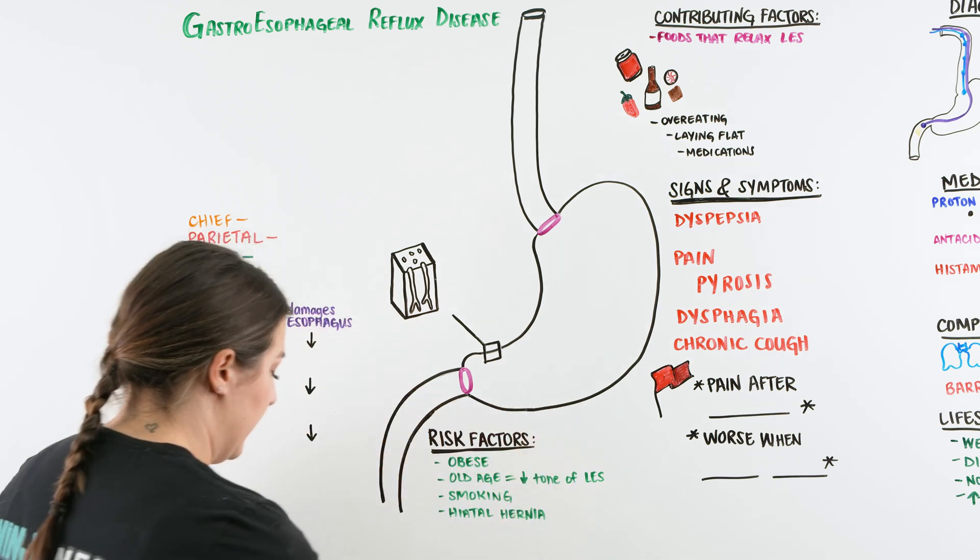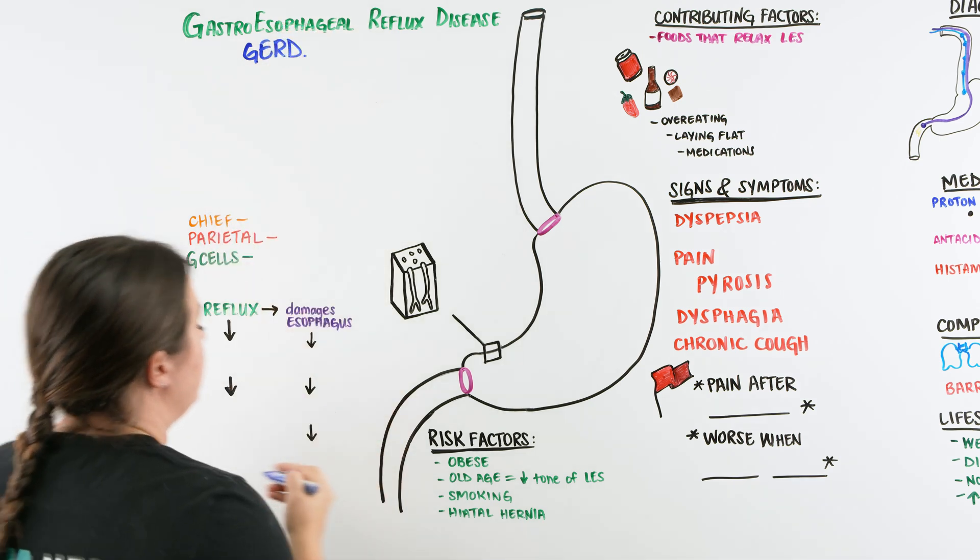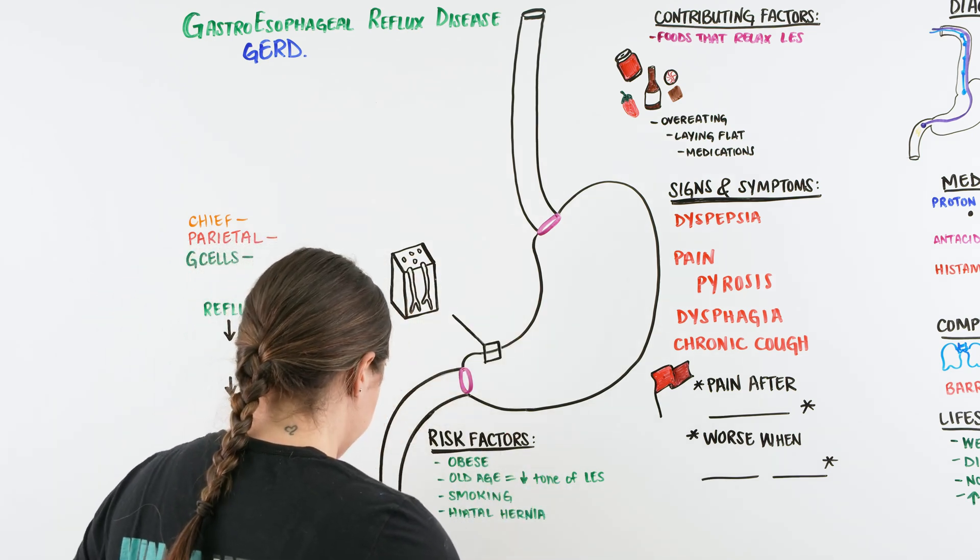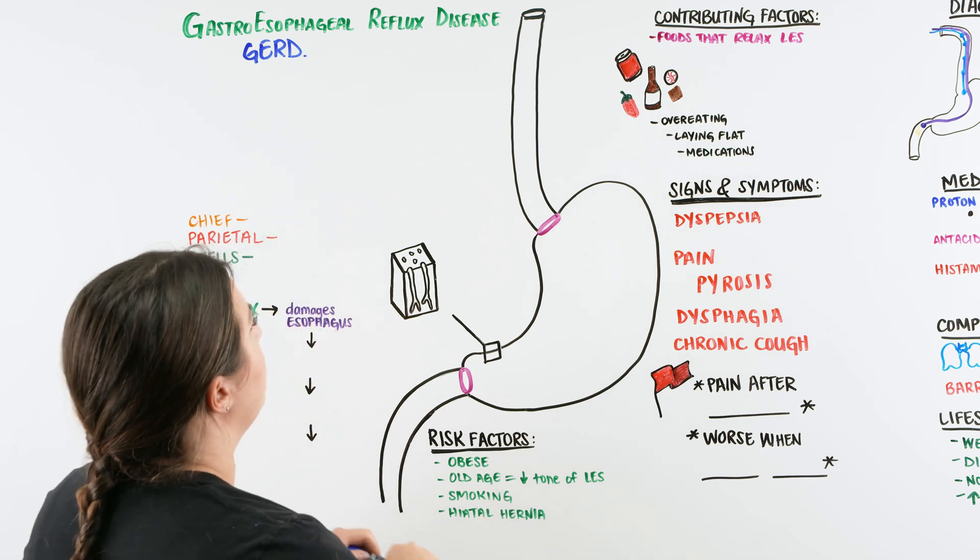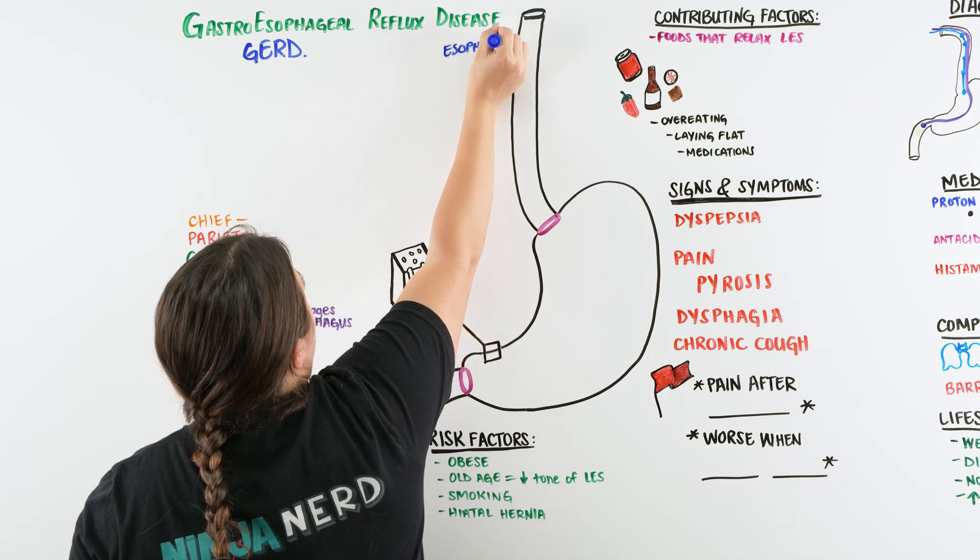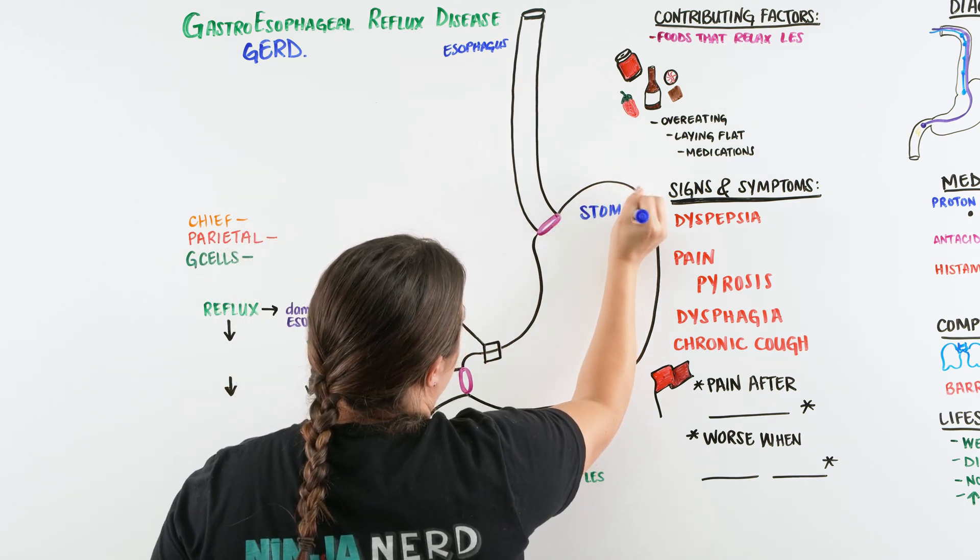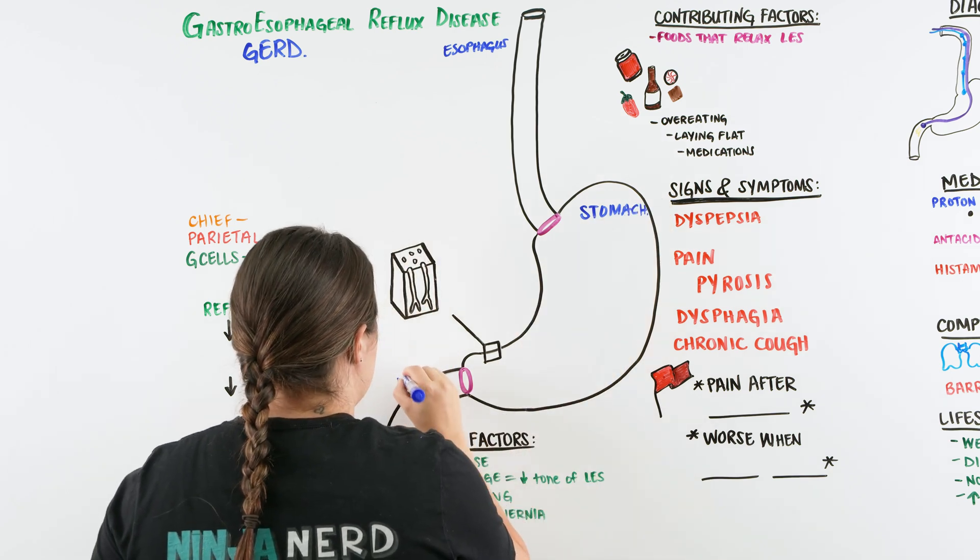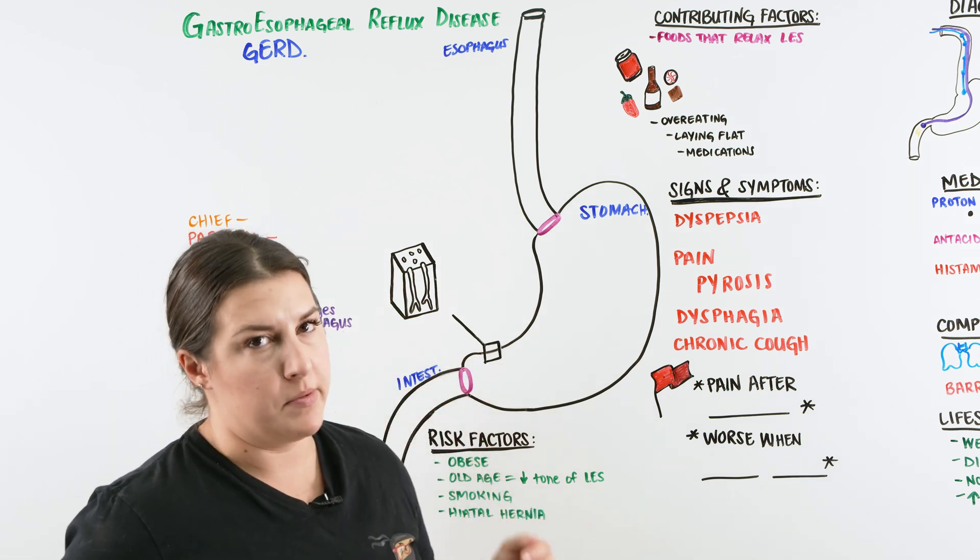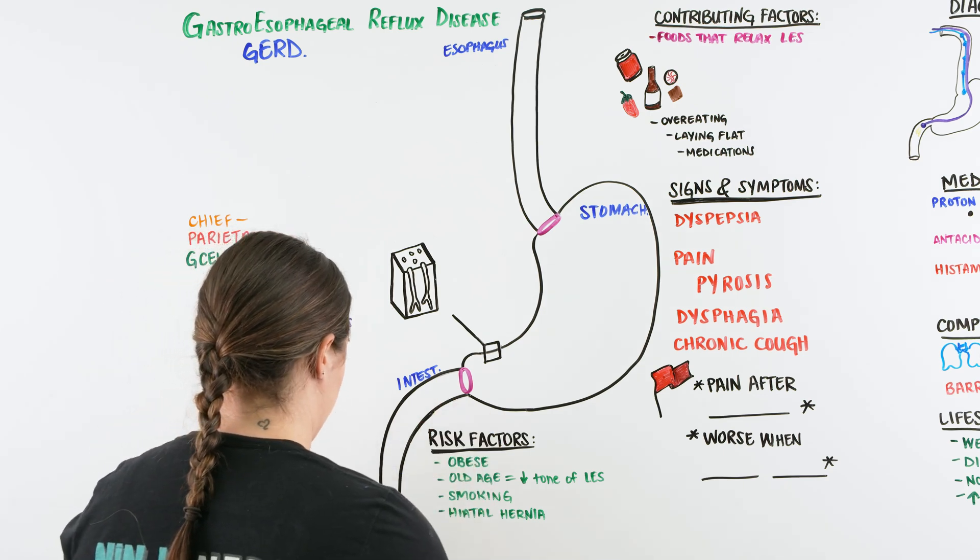When we're talking about GERD, we're going to be talking about how this can occur and affect our patients. On the board here, what I drew out was just a generic diagram of our anatomy. We have here the esophagus. When we eat something, it flows down from the esophagus into our stomach, and then eventually into our intestines. That's basic anatomy that we can recall from our anatomy class, but there is some anatomy in here that you may not remember or may not have talked about for a long time.